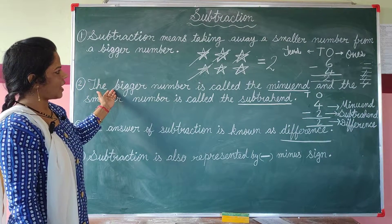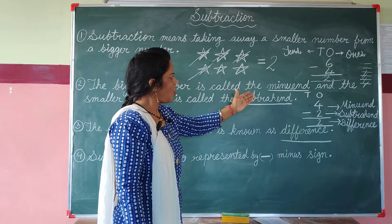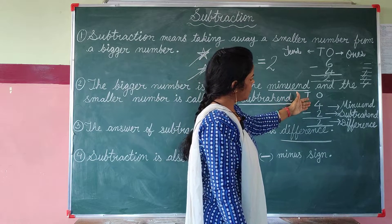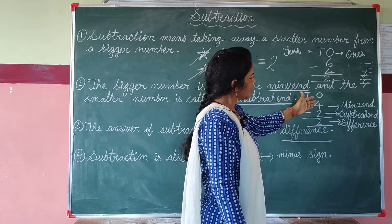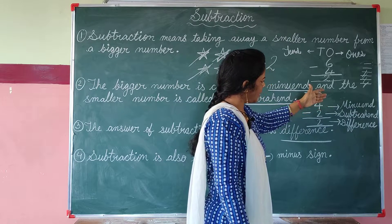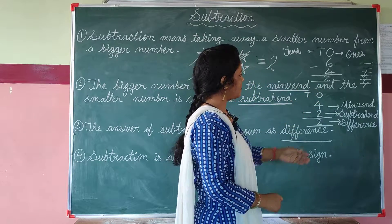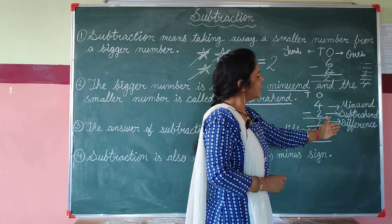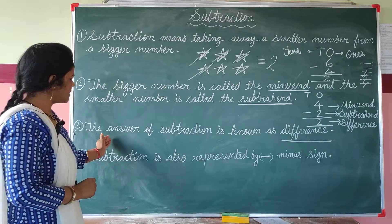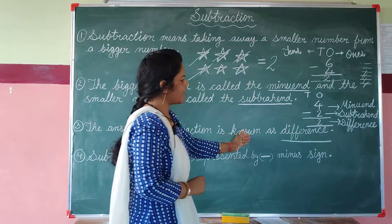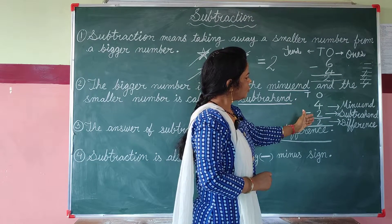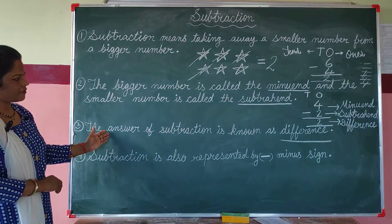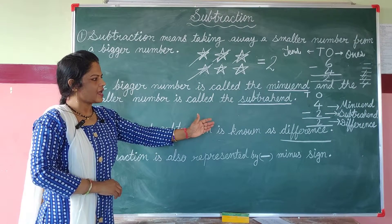Children, the bigger number is called the minuend and the smaller number is called the subtrahend. For example, 4 minus 2 — the number 4 is bigger, so it is the minuend, and the number 2 is smaller, so it is the subtrahend. When 2 is subtracted from 4, the answer is called the difference. Rule number 3: The answer of subtraction is known as difference. Here 4 minus 2 gives answer 2, so 2 is the difference.